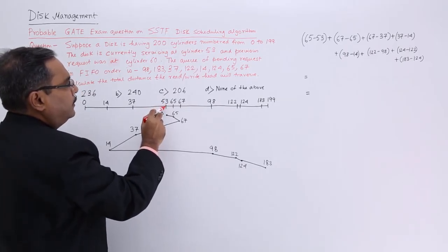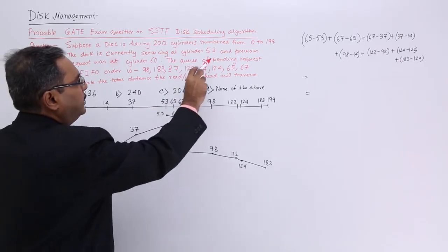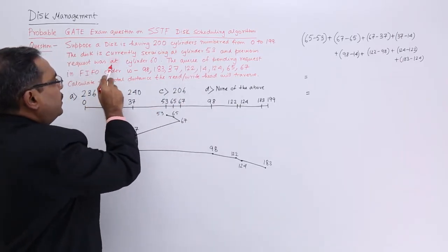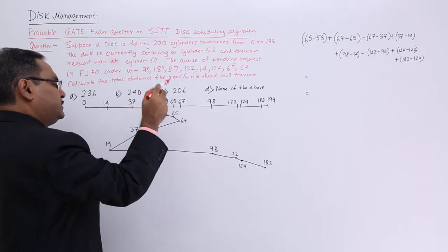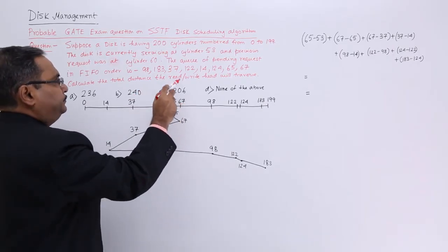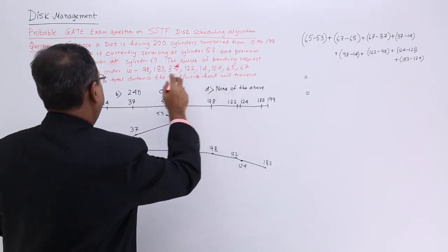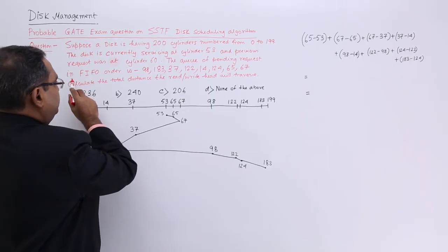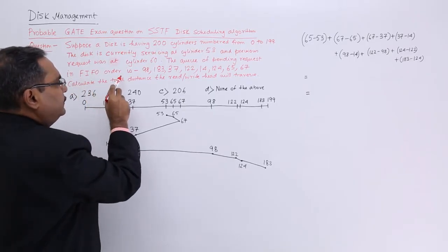Here the cylinder read head will be at this particular cylinder and the previous request was at cylinder 60. Prior to that, it was serving cylinder number 60. The queue of pending requests in the FIFO order is this.